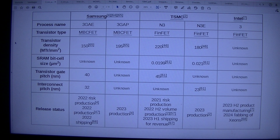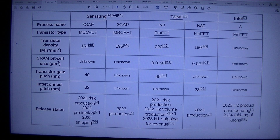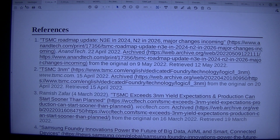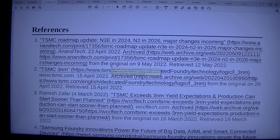Release status: 2022 risk production and 2022 production; 2022 shipping; 2023 production; 2021 risk production with 2022 H2 volume production; 2023 H1 shipping for revenue; 2023 production into 2023 H2 product manufacturing; and 2024 fabbing of Zions. References include a TSMC roadmap update with M3E in 2024.